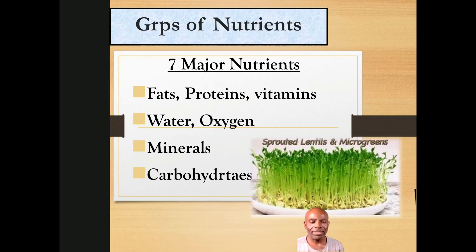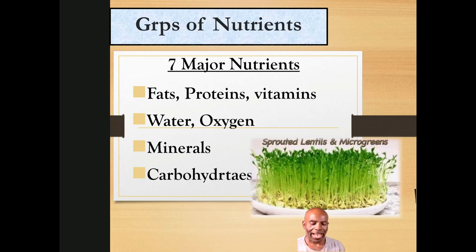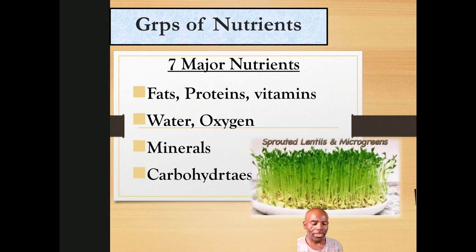The seven major nutrients are: fats, proteins, vitamins, water, oxygen, minerals, and carbohydrates. That is live food. We're going to talk more about live food and food preparation in the next class, including the hierarchy of how you should prepare your food holistically.